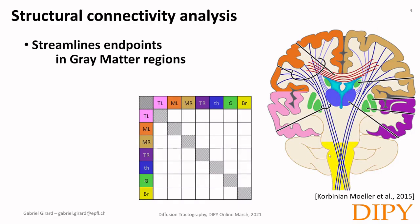We will now use those tractography streamlines to compute this structural connectivity. Most of the red streamlines represent the connection from the motor left in orange to the motor right in brown. We can use those streamlines to compute the values for those two regions — motor left to motor right. And since diffusion MRI is symmetric, this connection is also symmetric, going from motor right to motor left as well, so it has both connections.